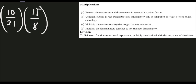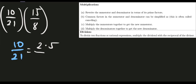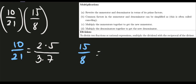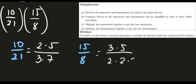Number one, we need to list down the prime factors. For 10 over 21: 10 is a product of prime numbers 2 and 5, and 21 is 3 times 7 — prime numbers 3 and 7. For our second fraction, 15 over 8: 15 is 3 times 5, and 8 equals 2 times 4, but 4 is not prime — it's 2 times 2. So we have these prime factors listed.